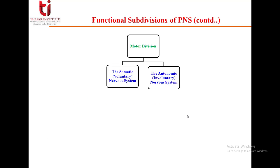Depending upon whether the information the motor division carries from the central nervous system is voluntary — consciously controlled by us — or involuntary and out of our control, like blinking of the eye or beating of the heart, the motor division can be classified as the somatic or voluntary nervous system and the autonomic or involuntary nervous system.